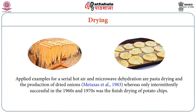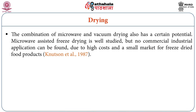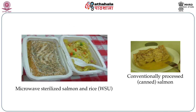As discussed in the previous class, drying of pasta, vermicelli, noodles, dried onions, and mashed potatoes or potato chips — combination with vacuum drying is more suitable and will have better results, or microwave-assisted freeze drying. Freeze drying is expensive, but microwave-assisted freeze drying can reduce cost and provide better quality than other conventional drying methods. In the picture, you can see microwave-sterilized salmon and rice compared to conventionally processed canned salmon. The microwave-processed product is better in quality and more appealing.